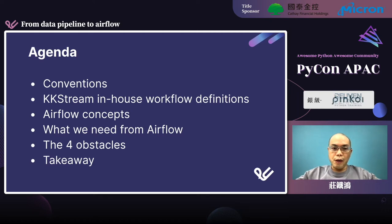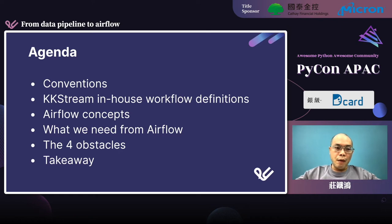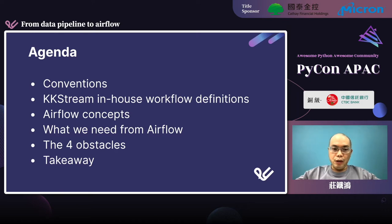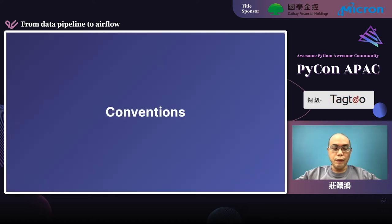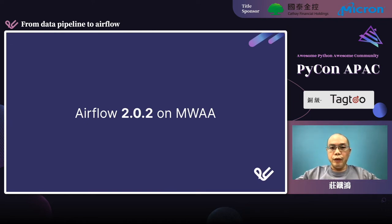This talk is about how we migrated the workflow platform from Amazon Data Pipeline to Amazon Managed Workflows for Apache Airflow, also known as MWAA. The first part of this talk is a list of conventions of this slide. Then I will introduce our in-house workflow definitions and Airflow concepts. After that, four issues in our migration will be addressed along with their solutions. Everything covered in this talk was tested with Airflow 2.0.2 on MWAA.